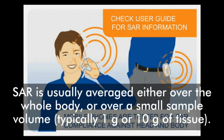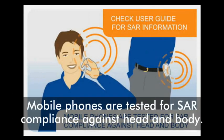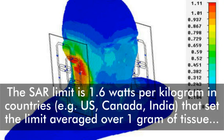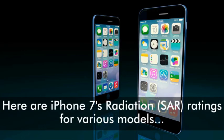SAR is usually averaged either over the whole body or over a small sample volume, typically 1 gram or 10 grams of tissue. Mobile phones are tested for SAR compliance against head and body. The SAR limit is 1.6 watts per kilogram in countries that set the limit averaged over 1 gram of tissue, and 2.0 watts per kilogram in countries that set the limit averaged over 10 grams of tissue.